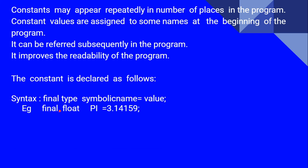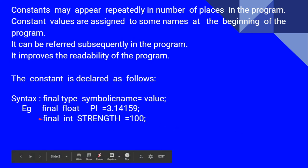For example: final float PI = 3.1415. Here, final is the keyword, float is the type, and PI is the symbolic name — a user-defined variable. Normally we use capital letters for symbolic constant names, but that is only a convention, not a requirement. Another example is: final int STRENGTH = 100, where int is the data type and STRENGTH is the variable name with value 100. This is the way we declare symbolic constants in Java.